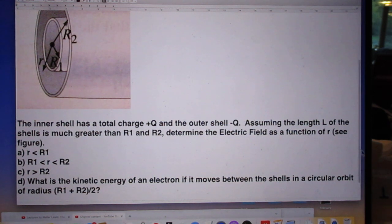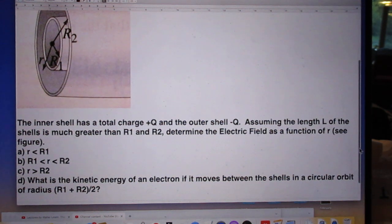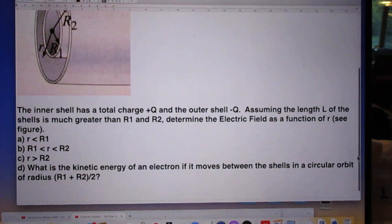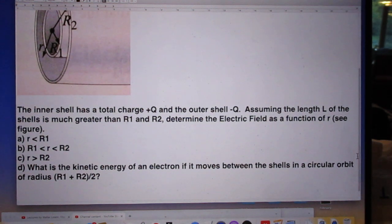So we do that in three different ways. The first question is that small r is smaller than capital R1.